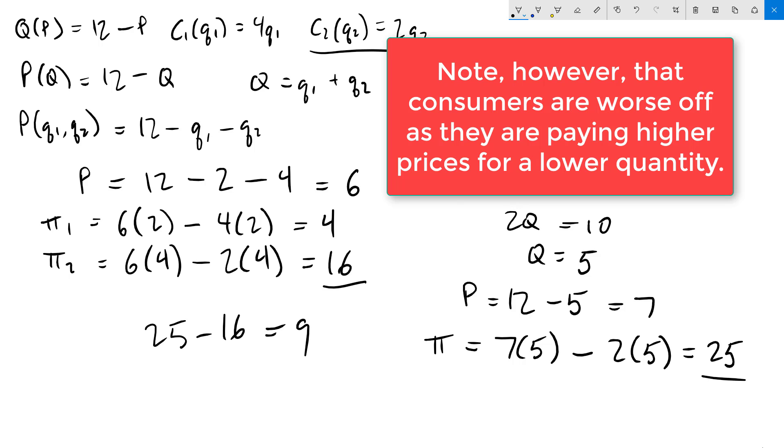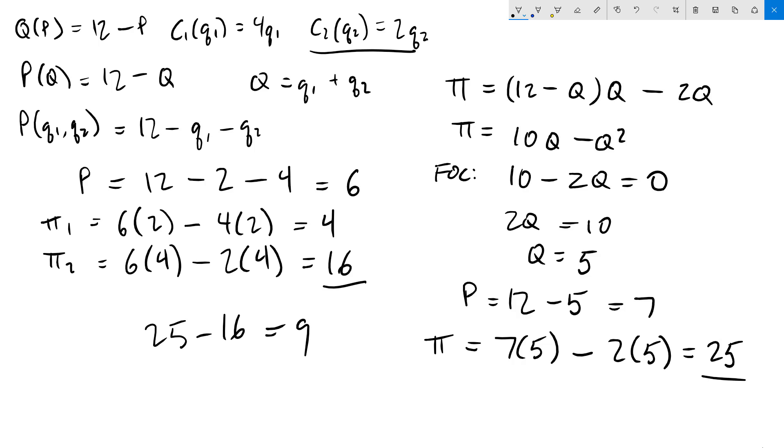If, for example, firm 2 bought out firm 1 for a price of 5, then both firms would be better off. To know what price they would end up with is a completely separate discussion, though, that is outside the scope of this video. If you have any questions about what we did cover here, feel free to let me know. Thanks for watching.